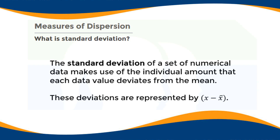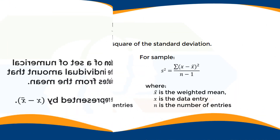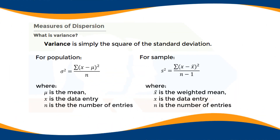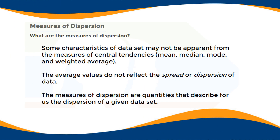The standard deviation of a set of numerical data makes use of the individual amount that each data value deviates from the mean. These deviations are represented by x minus the mean. The variance is simply the square of the standard deviation. The formula for variance is s-squared, where s is the standard deviation — for a sample, this equals the summation of (x minus the mean) squared, divided by n minus one.